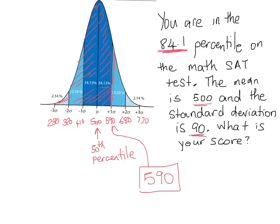You may be wondering what to do when you're not asked about a score that falls exactly one, two, or three standard deviations above or below the mean. So far, all our examples have fallen at exact standard deviation intervals. If that is not the case, we will need to use our calculators to get an exact answer — estimation is not good enough. Stay tuned for a future video to see how to do that.